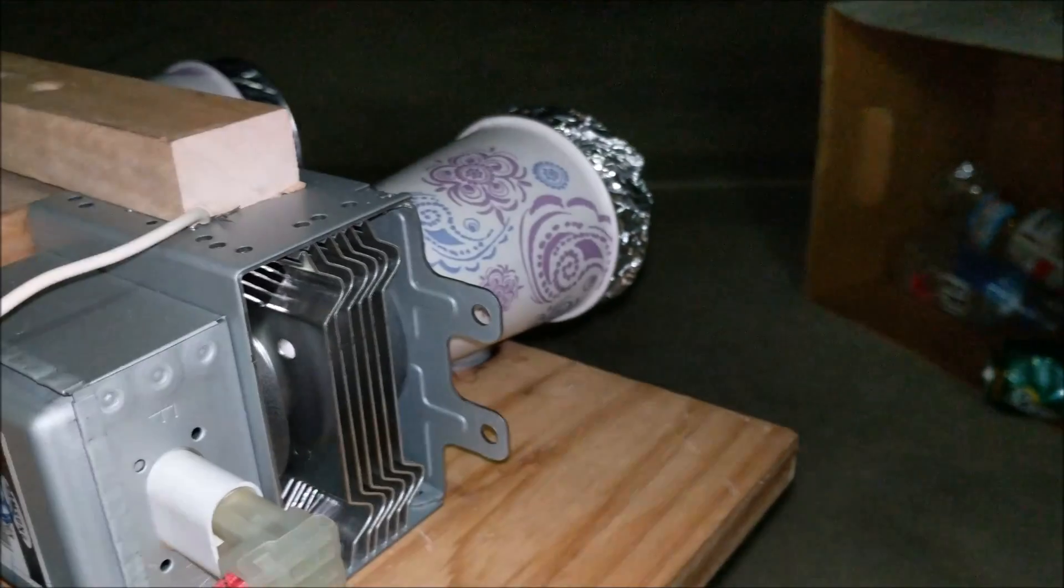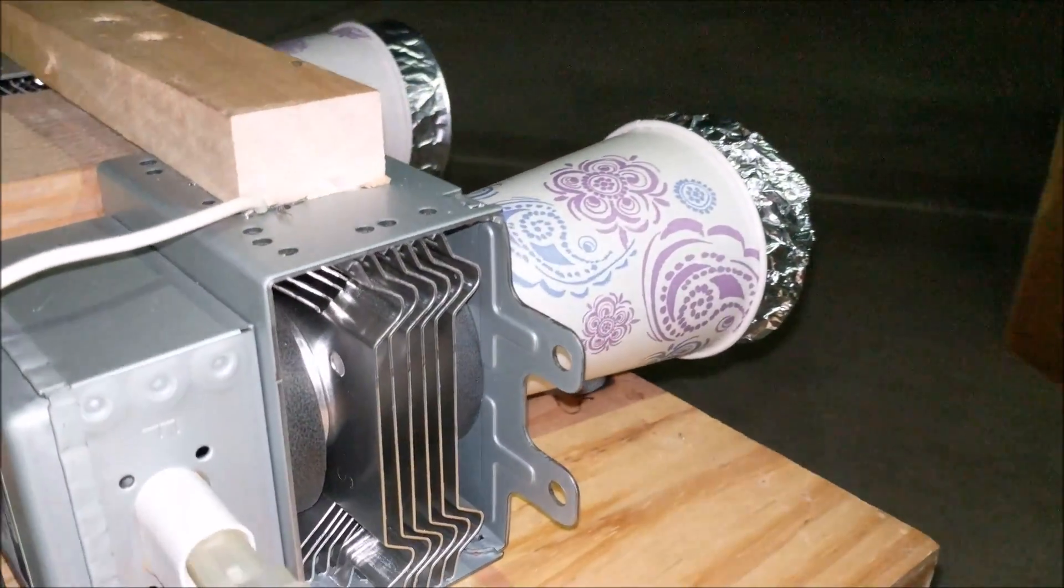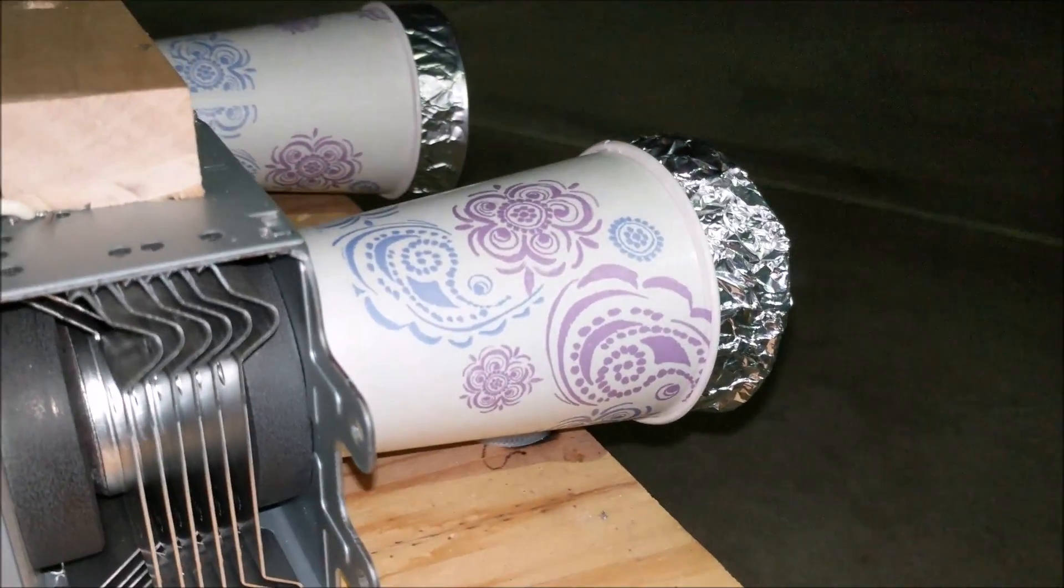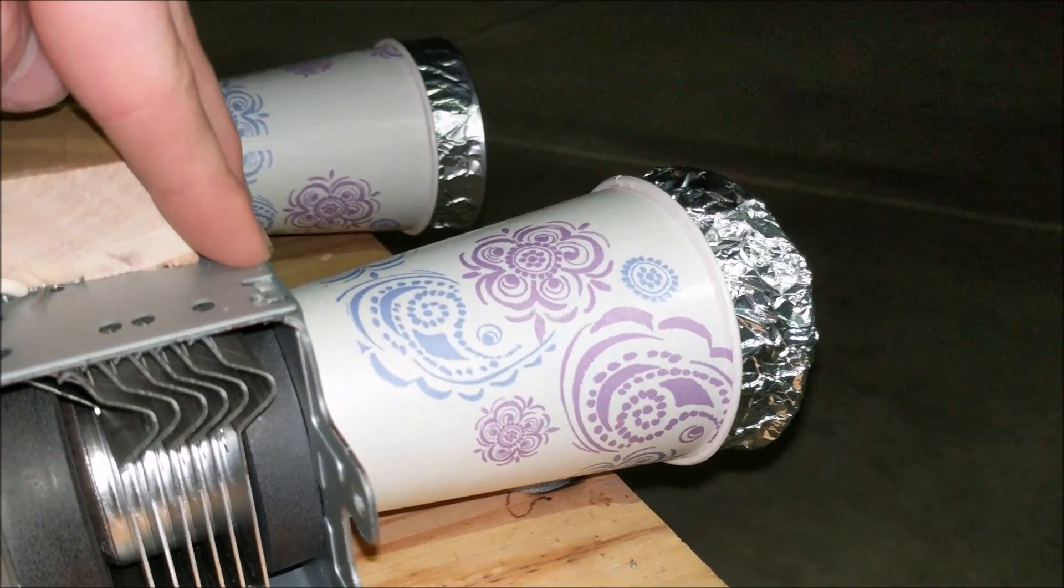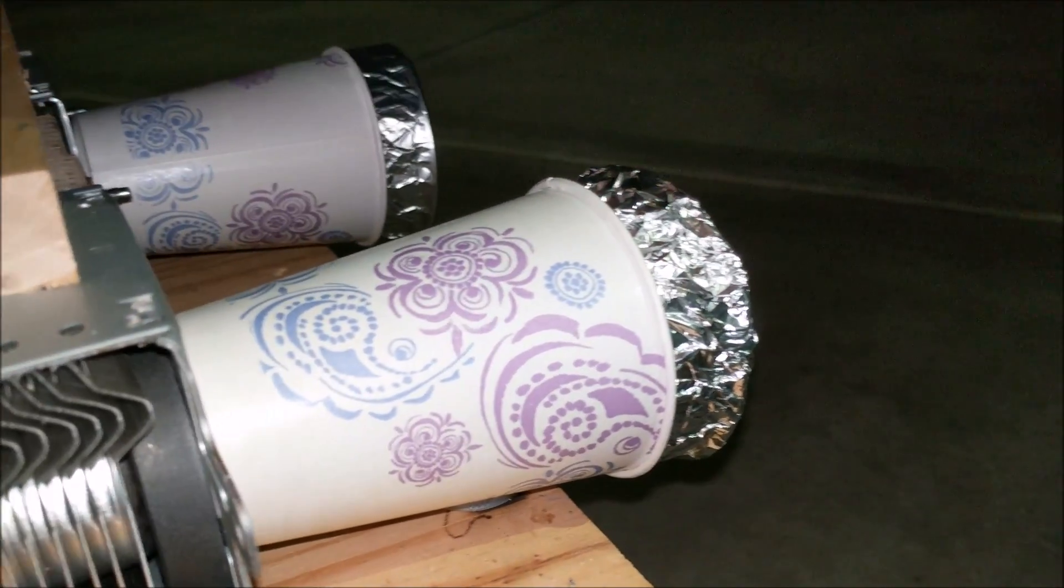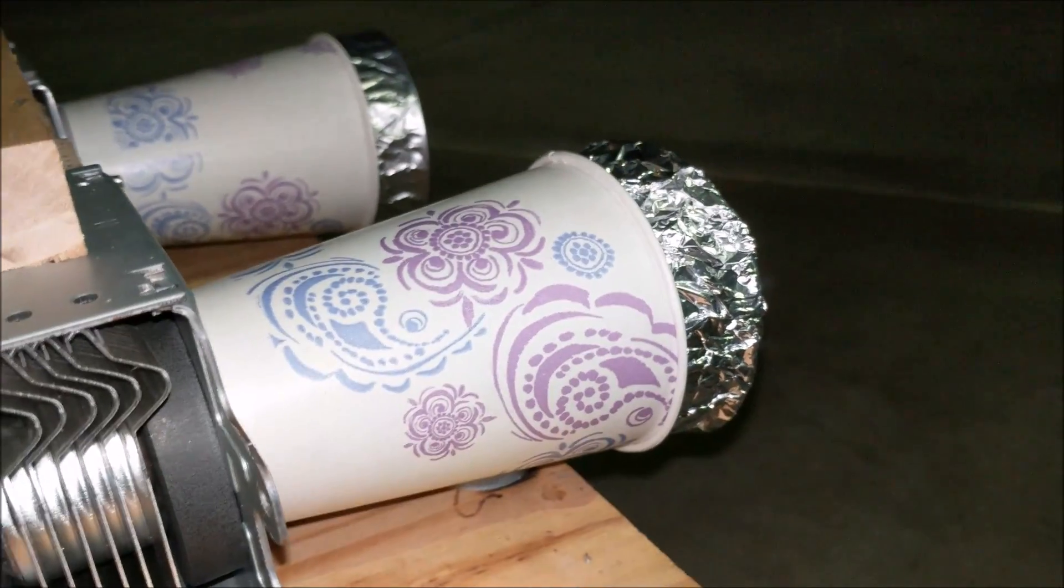On the end is something called a waveguide. This waveguide is a cup lined with aluminum foil that guides and deflects the radio waves from the magnetron out into a directed beam. This allows it to be focused on a certain object.